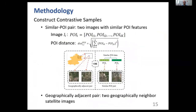Contrastive samples are the image pairs used to train the contrastive learning model. They either have similar POI configurations or they are geographic neighbors. To construct the similar POI pair, for each satellite image, we define a POI vector with each dimension representing the number of each POI category. Those satellite images with the least POI distance are considered the most similar satellite images in the POI domain.